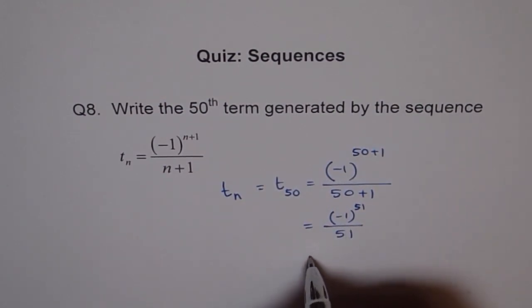Now what is minus 1 to the power of 51? Minus 1 to the power of 51 is minus 1, divided by 51. So that is our answer.